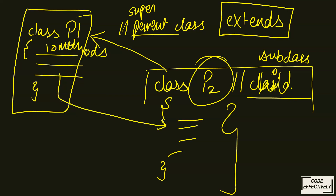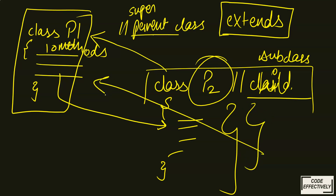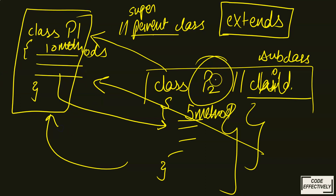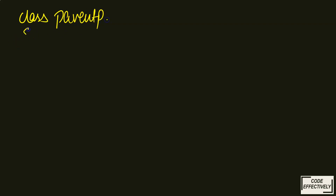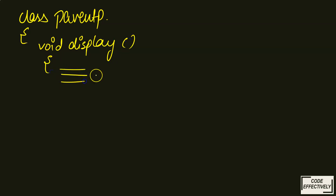With extends, all the methods of the P1 class will be inherited by P2 — if P1 has 10 methods, all 10 will be accessible by P2. However, this is not vice versa — the child's properties do not go to the parent. So if P2 has 5 methods, those 5 methods cannot be used by P1. Let me give a clear picture: here is a parent class called 'ParentP' with a method 'void display'.